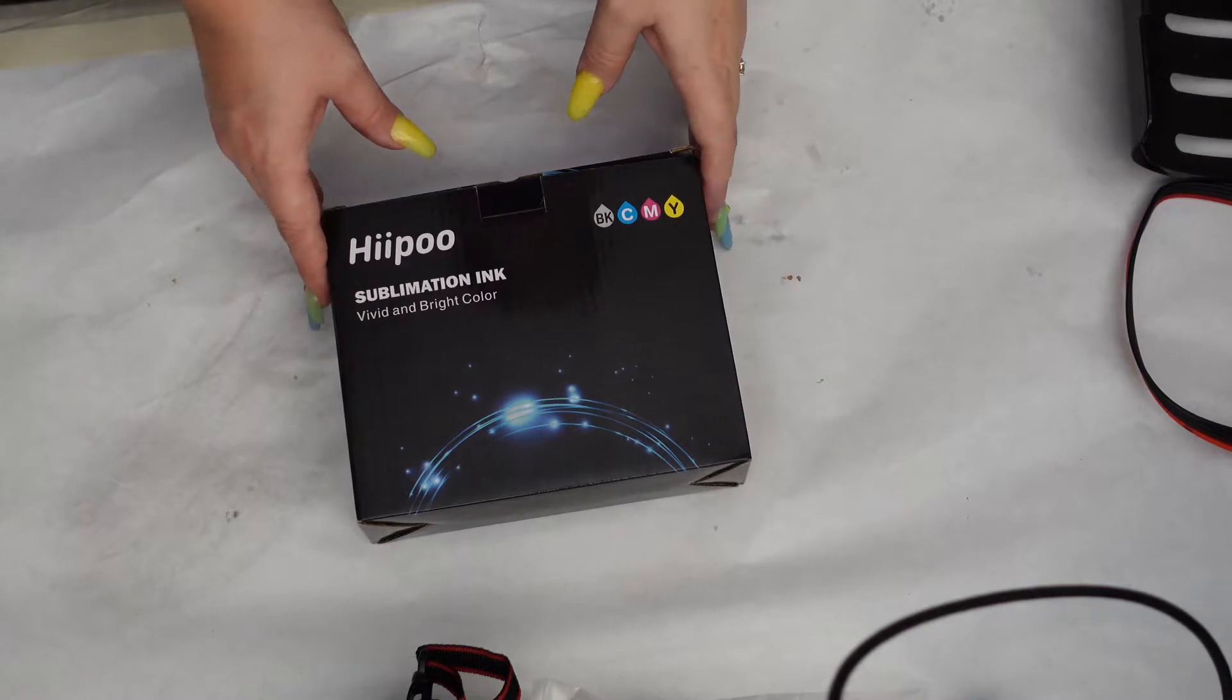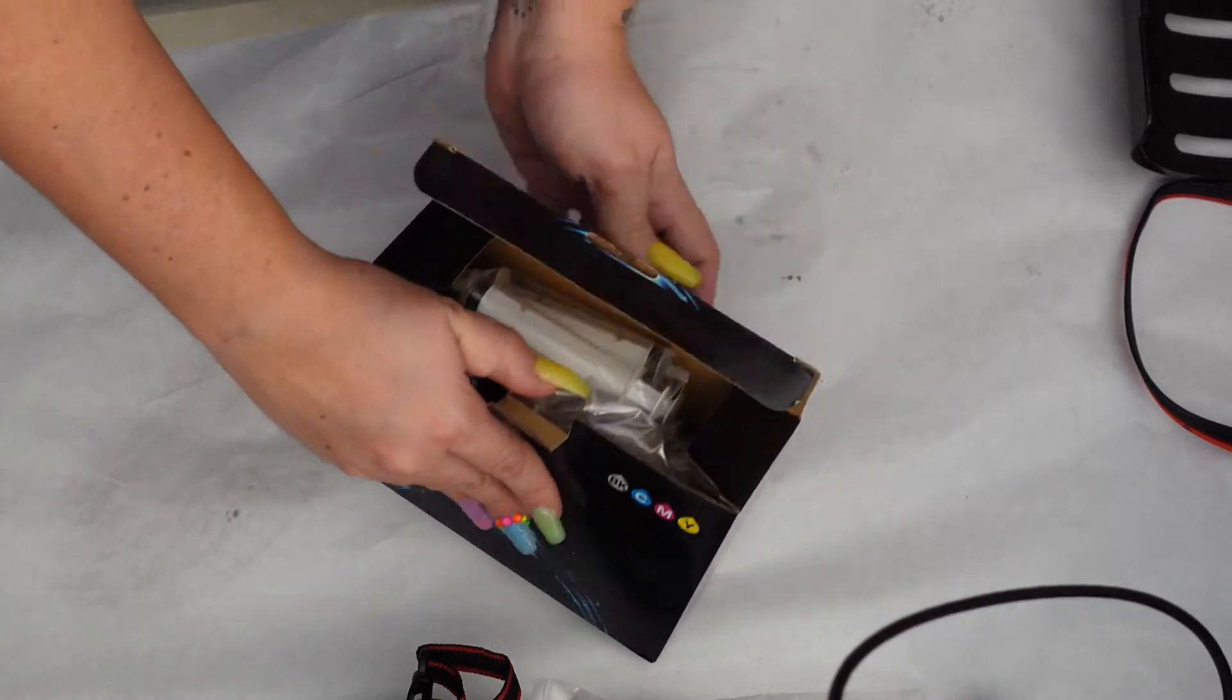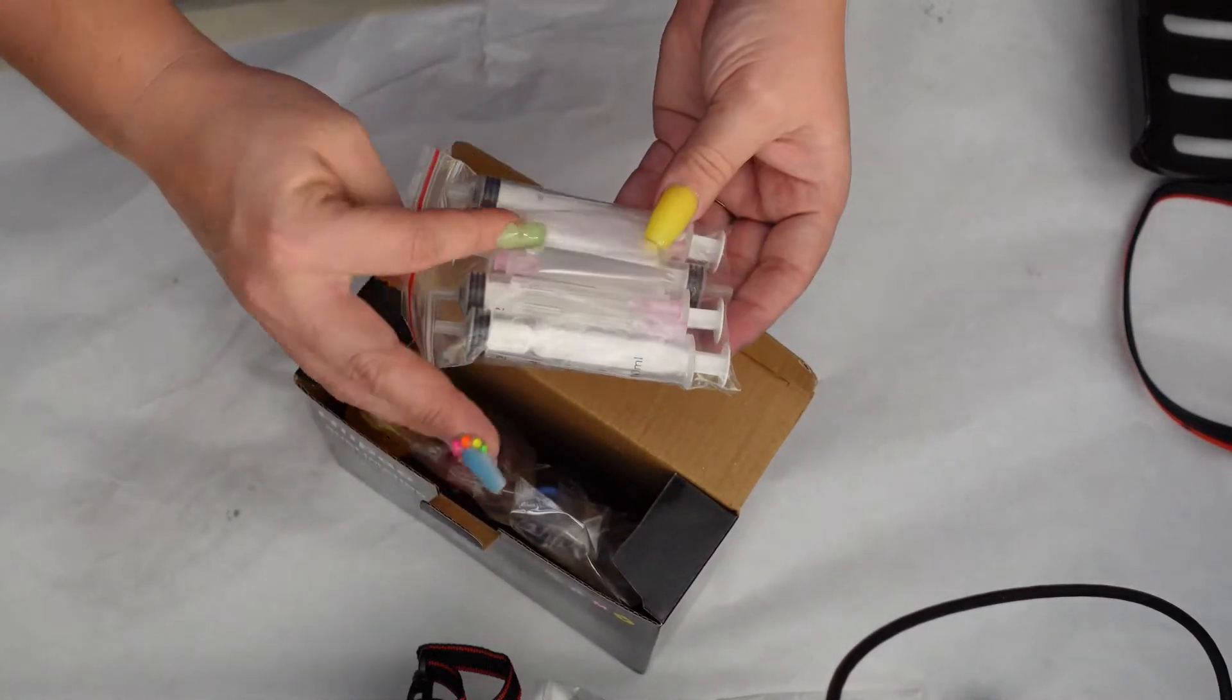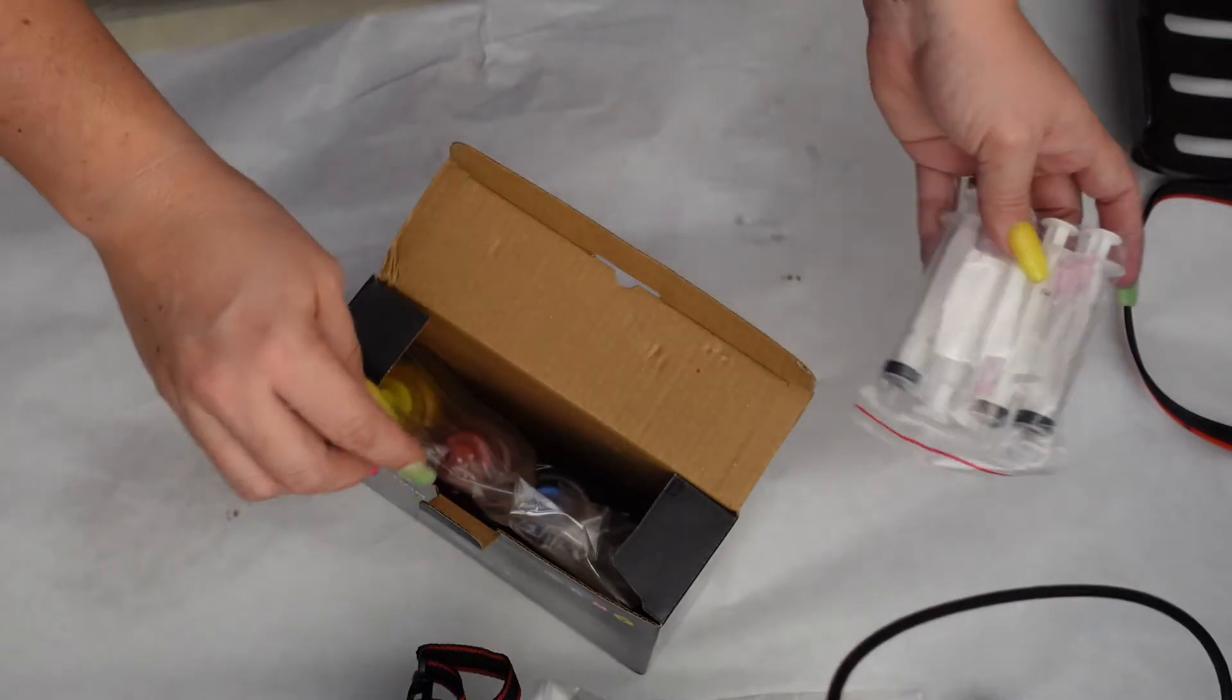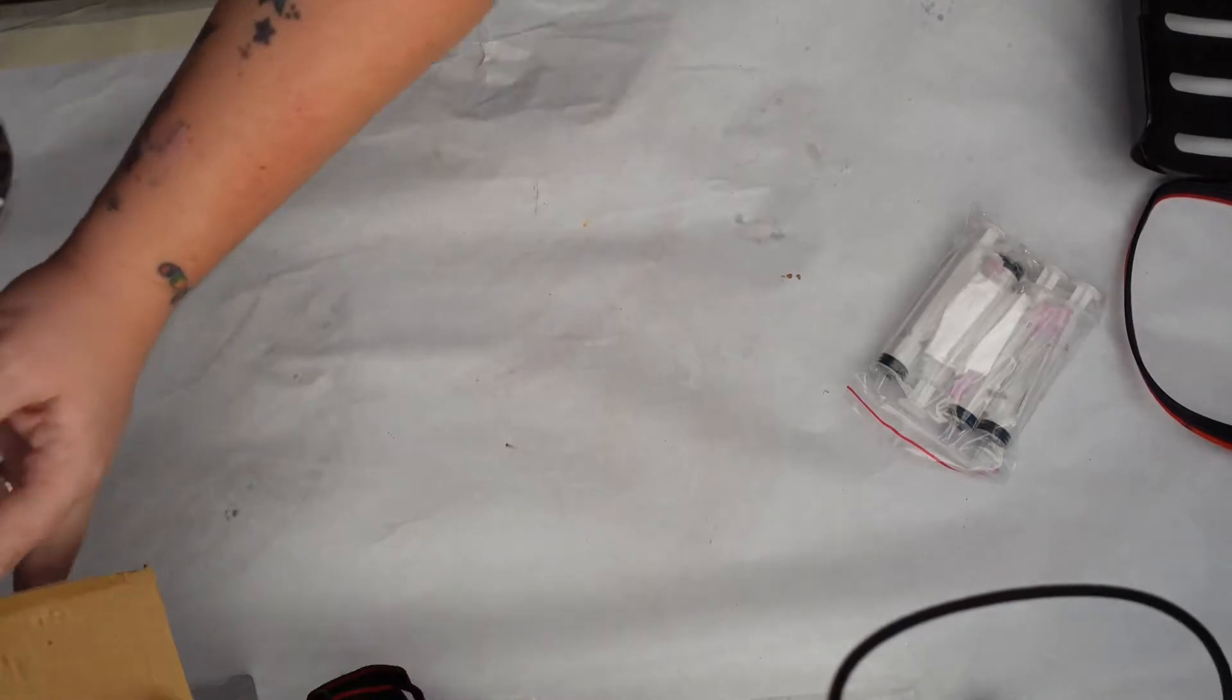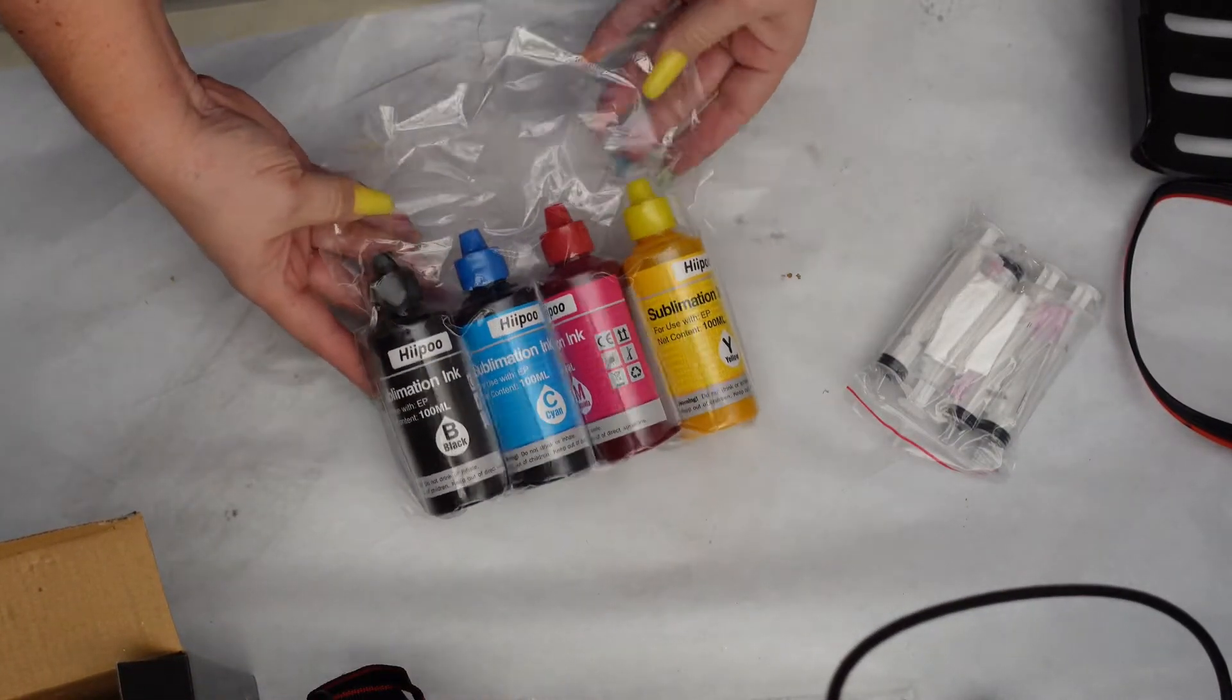Alright, so we got our Hippo sublimation ink here. And we are going to open it and see what all came with it. Alright, so we got some plungers and some needle things. Alright, and we got some of the ink. Okay.